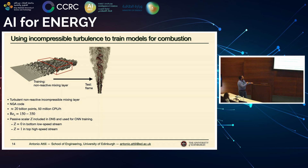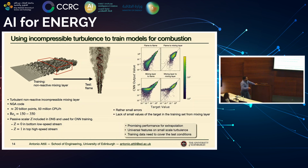We also tried something more extreme: we took a mixing layer — non-reactive, no combustion at all, just turbulence — trained the model on it, and applied it to a flame. Interestingly, the performance on the left graph are not very bad. They become bad for very small values of the quantity, which are relevant here, but the reason is simply that those small values — 10 to the minus 3 — never appeared in the mixing layer training data, so the neural network can't predict them. It's not because conceptually this cannot be done. That was very interesting and good news.